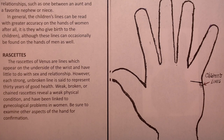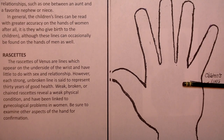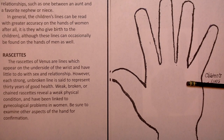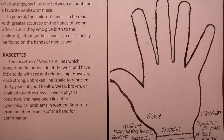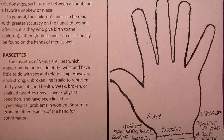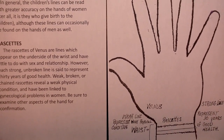So that's what we have for children's lines. The lines will appear under the relationship line. Now we go on to our last one, and we're talking about something else.